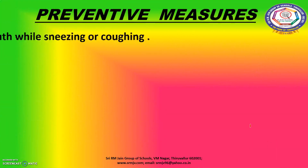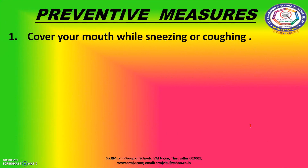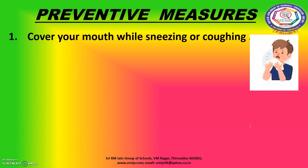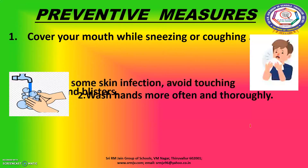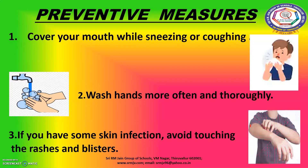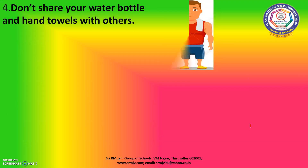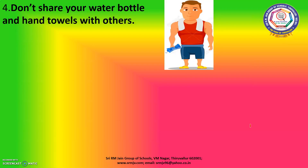Preventive measures. Cover your mouth or nose with a tissue when you cough or sneeze, and throw used tissues in the trash. If you don't have a tissue, cough or sneeze into your elbow, not your hands. Washing your hands is one of the easiest ways to protect yourself and others from illness such as food poisoning and flu — wash hands more often and thoroughly. If you have a skin infection, avoid touching the rashes and blisters. Sharing water bottles, straws and spoons could spread cold and strep throat, so don't share your water bottles and hand towels with others.